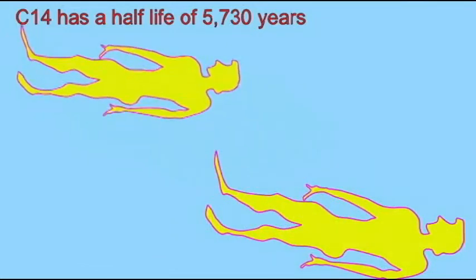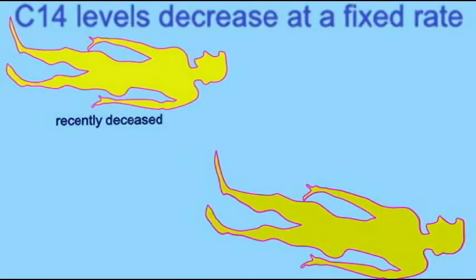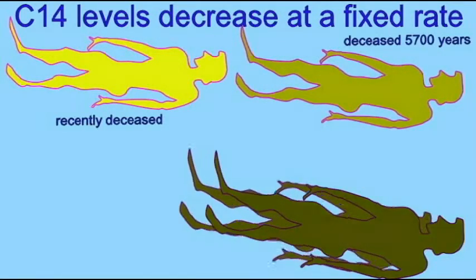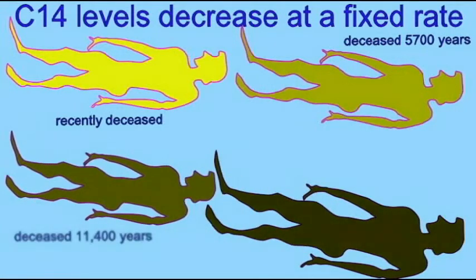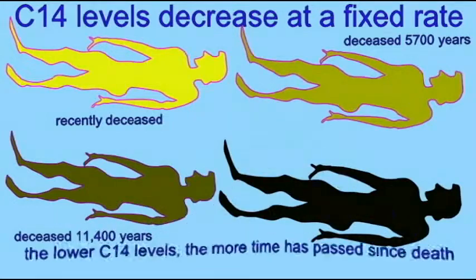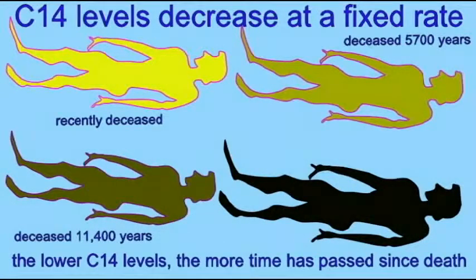Now since carbon decreases its concentration with a half-life of about 5,700 years, about half of the original amount is gone in 5,700 years, this can be used to calibrate a clock to date objects which were once alive.